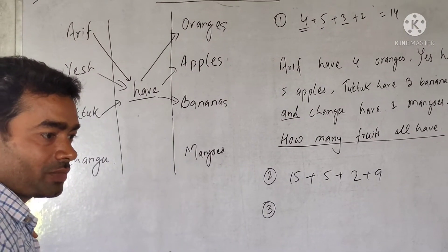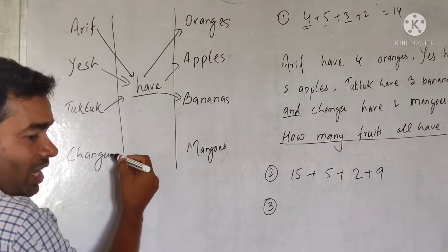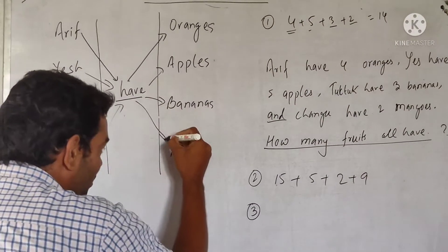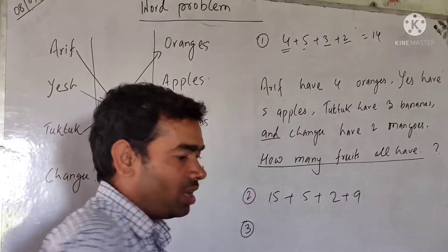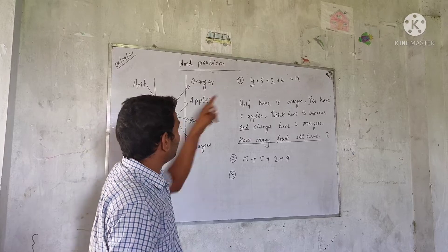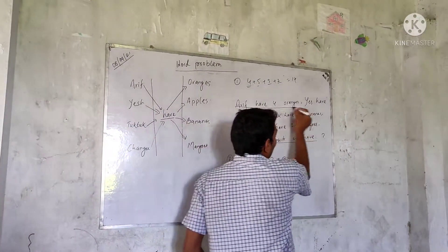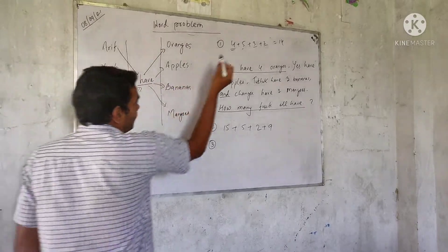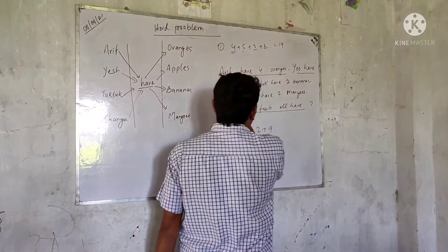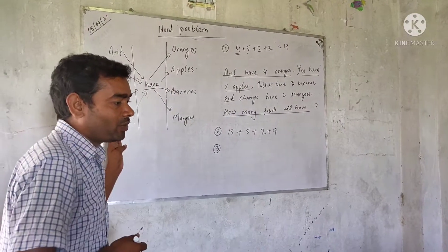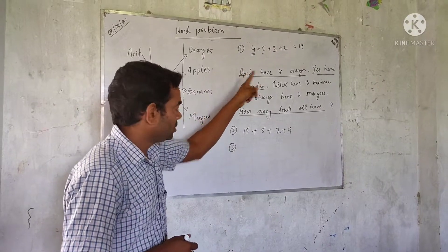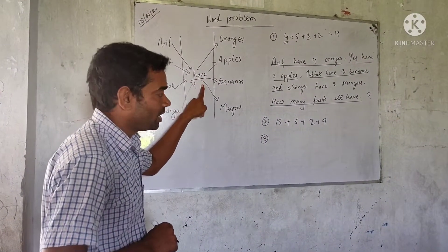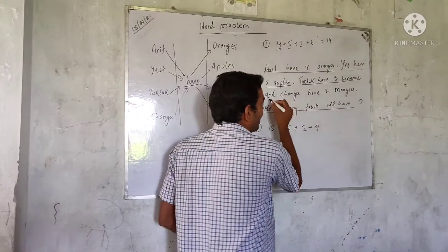Are you getting all this? Yes. Changu have two mangoes. So the same thing you have to write down. Arik have four oranges, have five apples, Tuk Tuk have three bananas, and Changu have two mangoes.